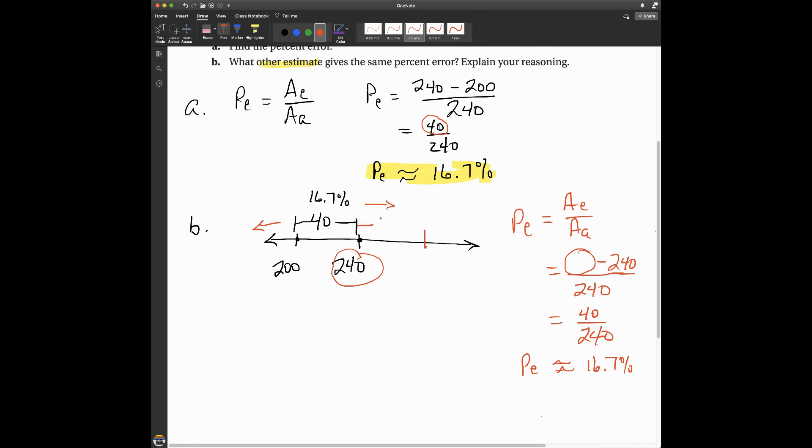All right? So, all I have to do is I have to go this direction, 40 students. And where do I end up? 280.